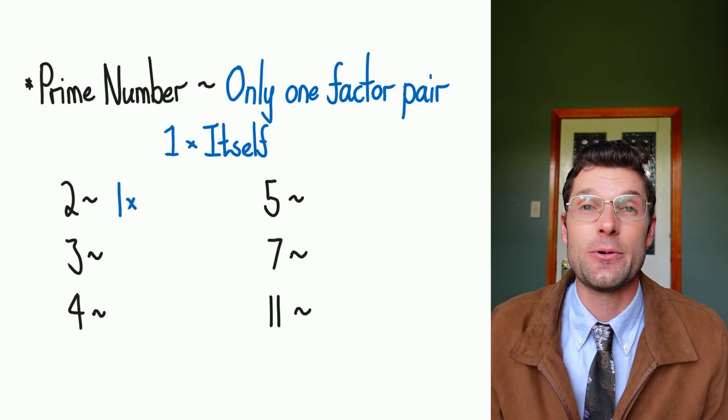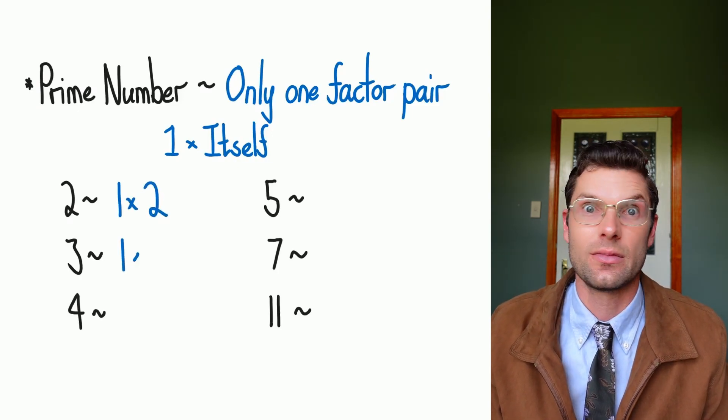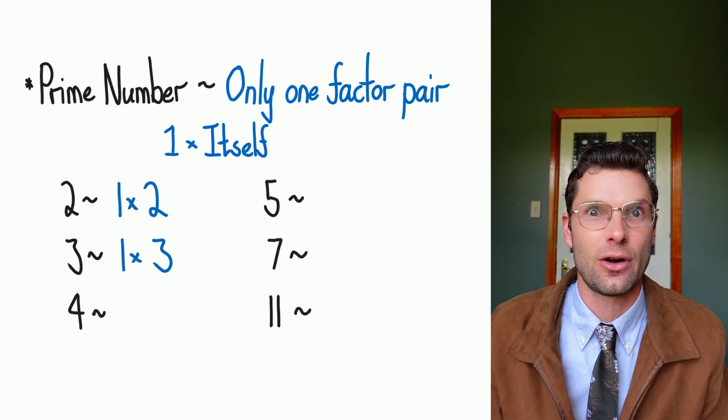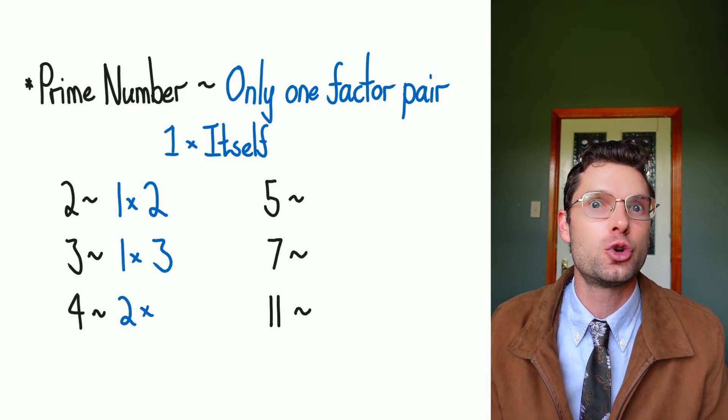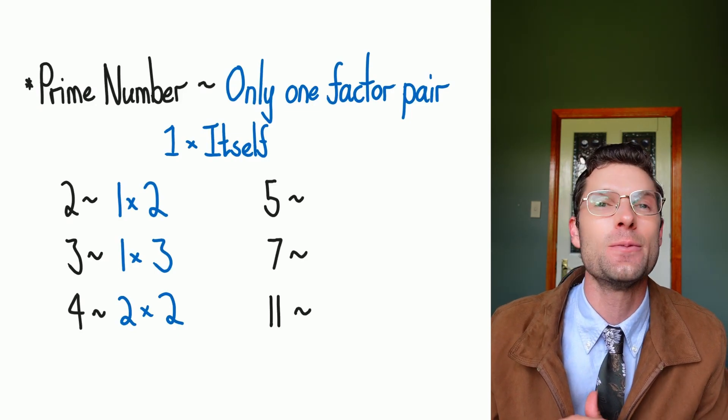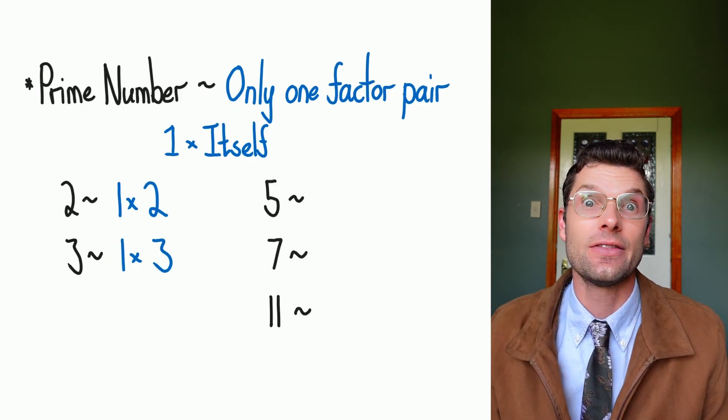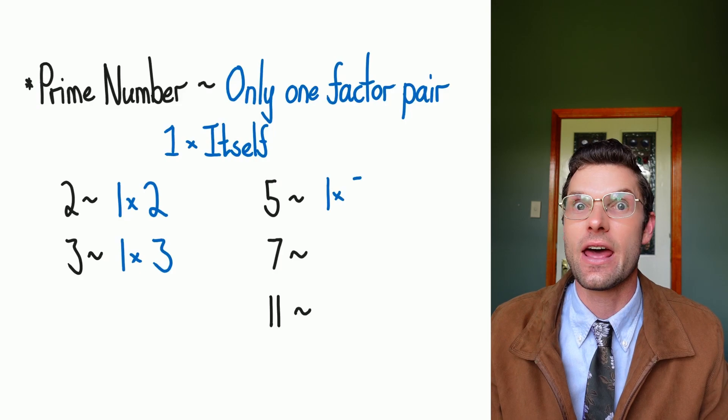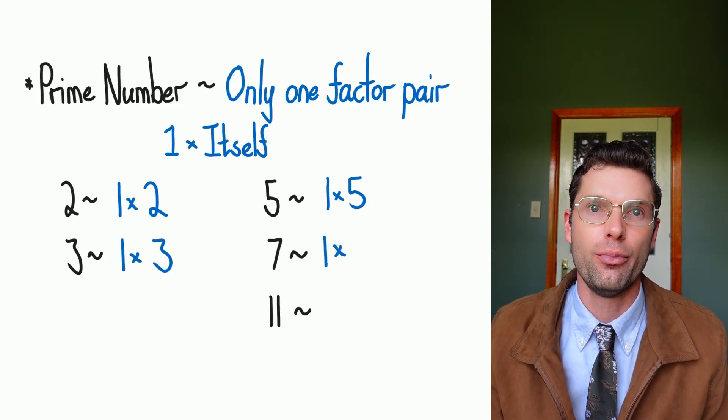So if we're trying to get to the number 2, the only way we can do that is 1 times 2. If we're trying to get to 3, it's 1 times 3. But if we're trying to get to 4, we could do 2 times 2 and 1 times 4. So 4 is not a prime number. Then on the other side, 5, 7, and 11 are all also prime numbers.